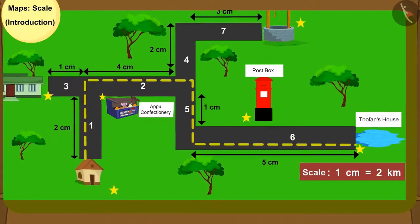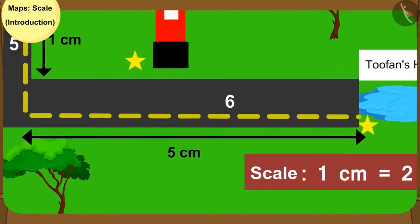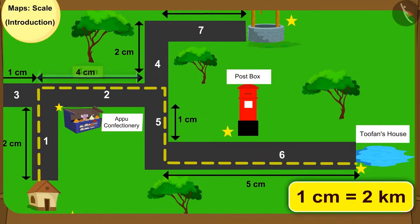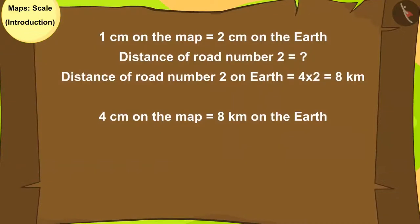Now can you tell the distance of road number 2 using the scale on the map? You can find the answer by pausing the video. Kids, your answer is absolutely correct. The distance of road number 2 is 8 km.